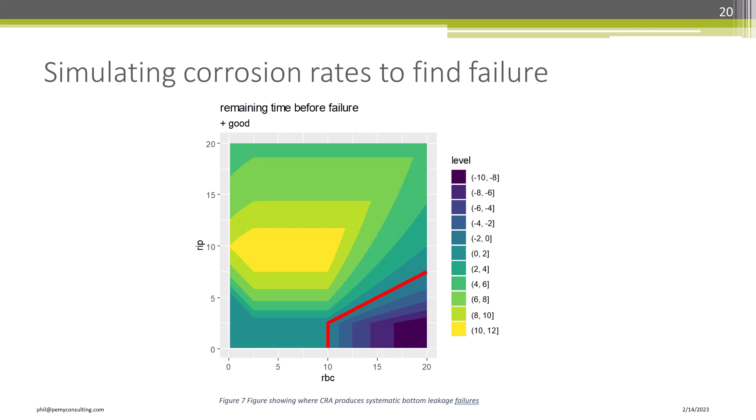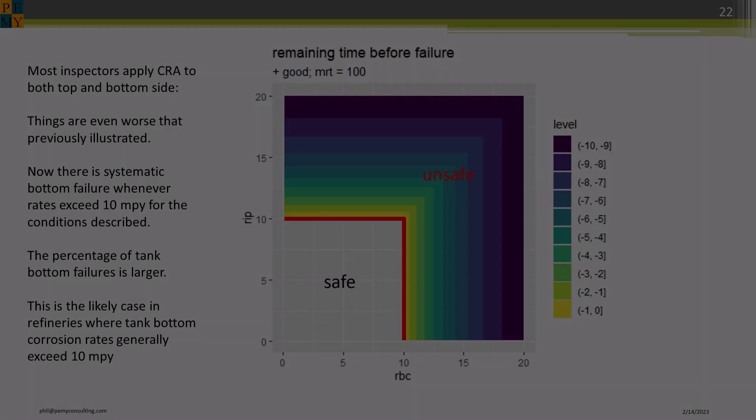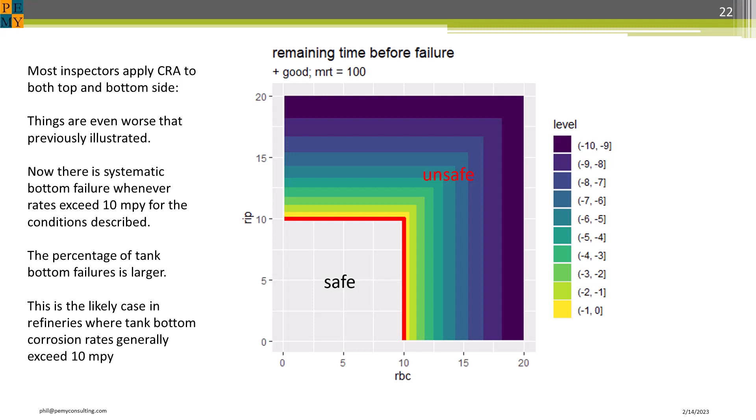The simulation shows that failure occurs whenever the corrosion rate penetrates the remaining thickness after repairs. This simulation shows failure for the conditions previously described, one of them being the remaining thickness of 200 mils. Note how the unsafe region has increased well beyond the interpretation where CRA only applies to the top side. CRA applied to both sides is worse than the case we have illustrated. We don't go into the details because the complexity of figuring out what CRA does and comparing it to LCR is a big job and becomes very difficult to explain.